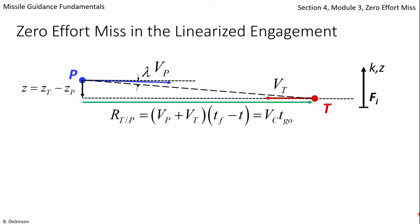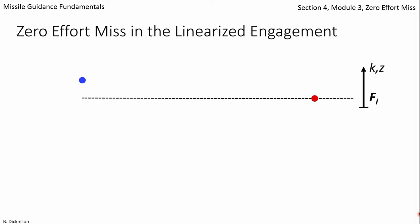Now, at time to go equal zero, these bodies will come together in the horizontal direction, leaving some vertical distance between them. That distance is the zero effort miss, in particular because the pursuer and target did not maneuver throughout their motion.